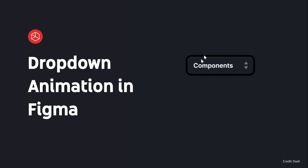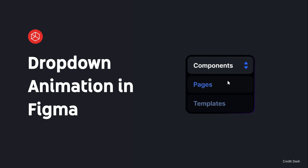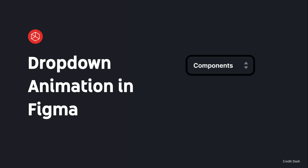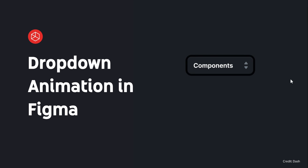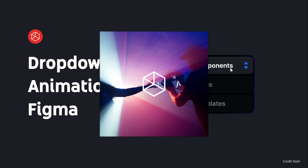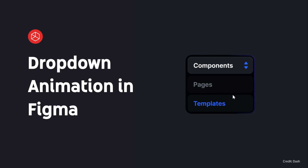What's going on everyone and welcome to Digital Perspective. In today's tutorial we're going to be taking a look at how we can create this really nice components animation. You can see on the right hand side it has this really nice little blue to red gradient going on, and we're going to try to create this inside of Figma.